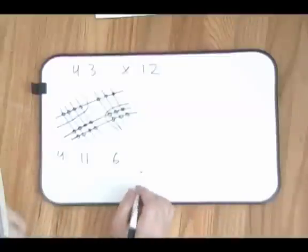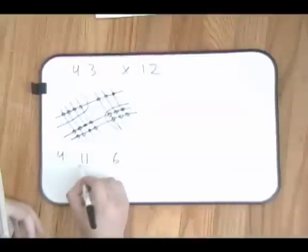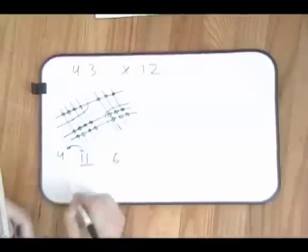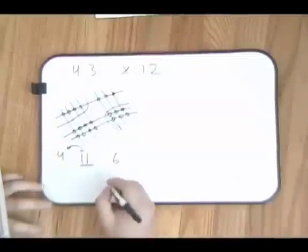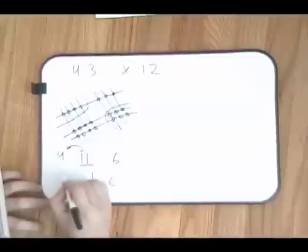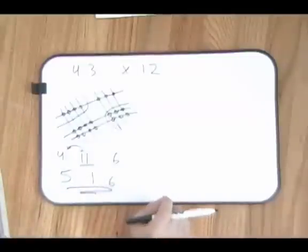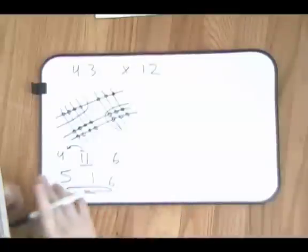Now if you have more than one digit, like here, what you do is take the tens place and add it to here. So what you'll get is 5, 1, and 6. Go check that out right now in your calculators and it should be right.